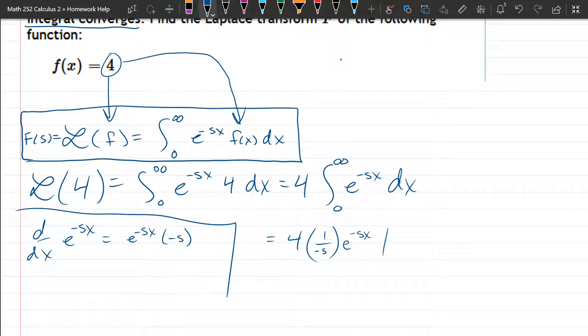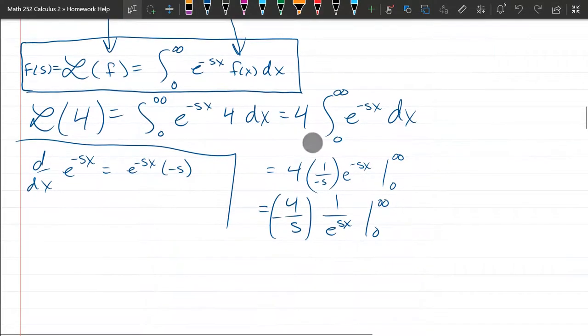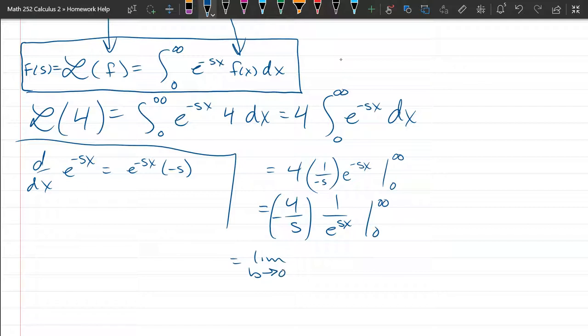And now we're going from zero to infinity, so I'm going to write this as negative 4 over s as the constant times 1 over e to the sx, and I just use a negative to reciprocate here. Now before we plug in infinity we're going to write this as limit b approaches infinity